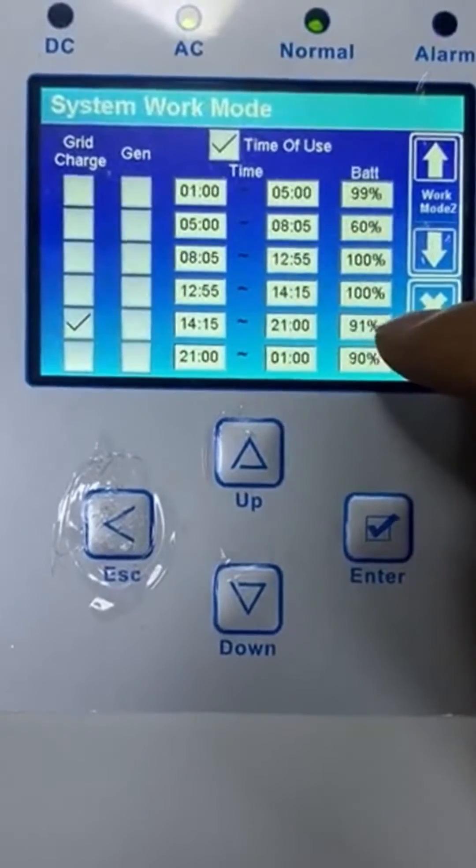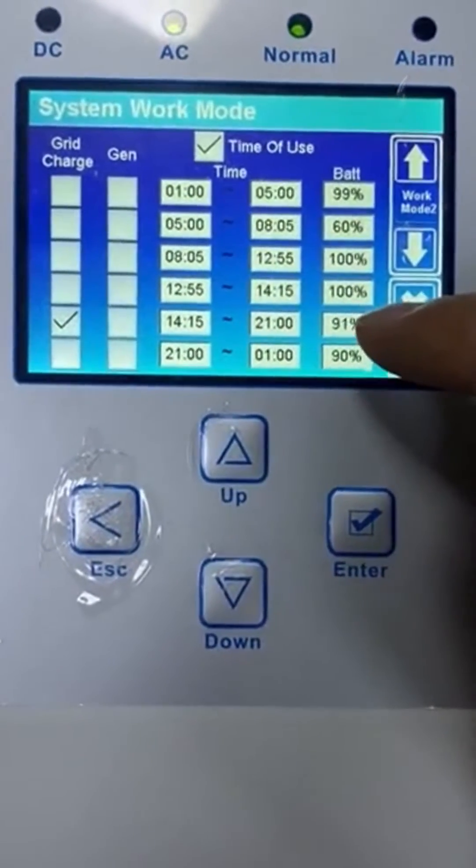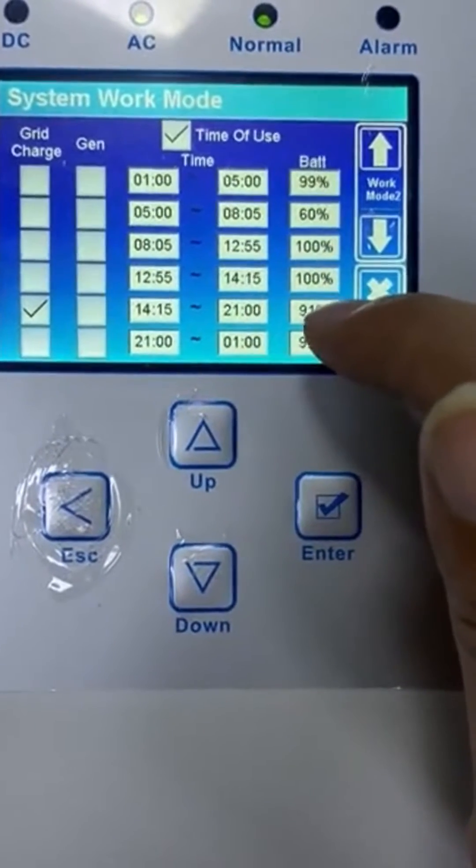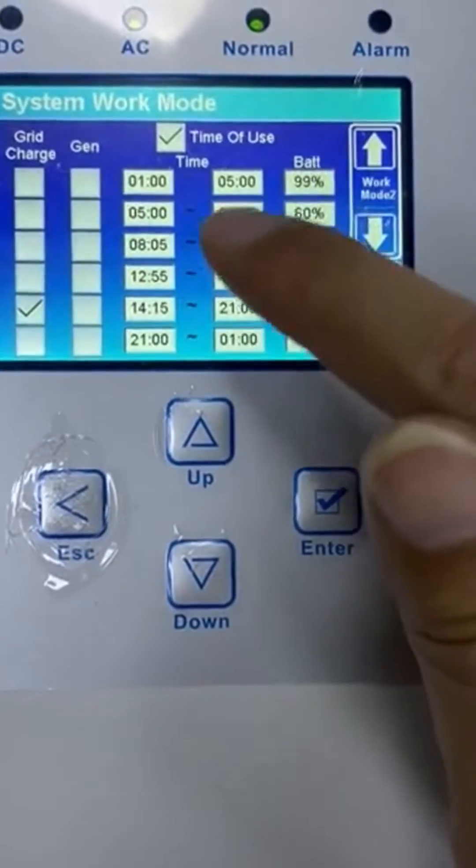And here, we set the threshold at 91%. In this time period, if the battery SOC is less than 91%, it will use grid energy to charge the battery.